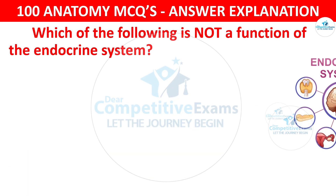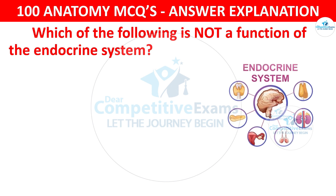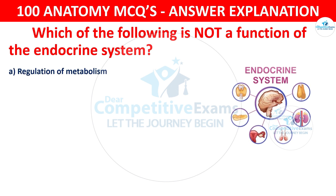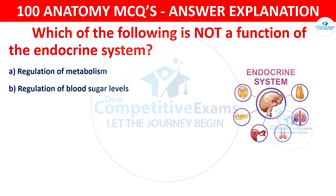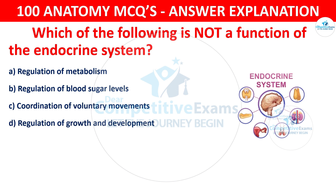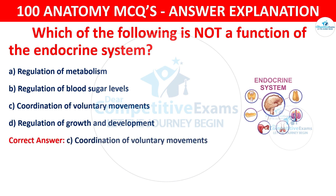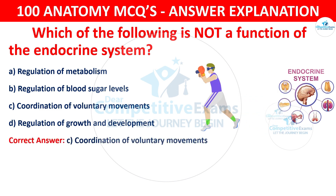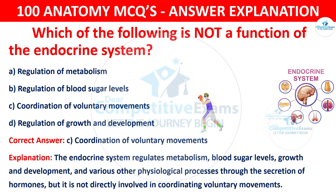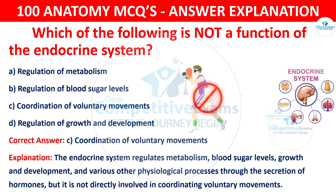Question number 91: Which of the following is not a function of the endocrine system? The options are: Regulation of metabolism; Regulation of blood sugar levels; Coordination of voluntary movements; or Regulation of growth and development. The correct answer is C — coordination of voluntary movements. The endocrine system regulates metabolism, blood sugar levels, growth and development, and various other physiological processes through hormone secretion, but is not directly involved in coordinating voluntary movements.